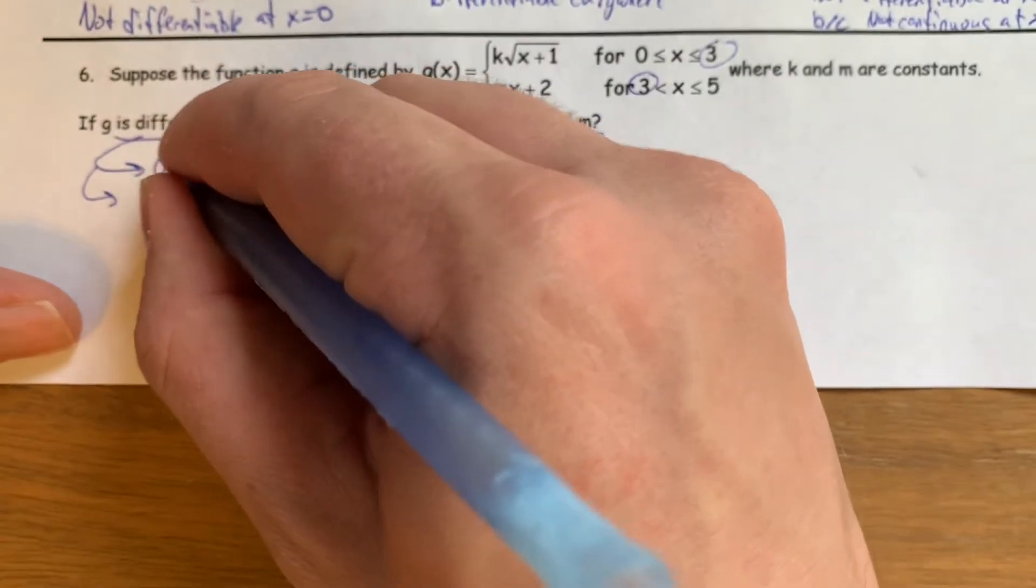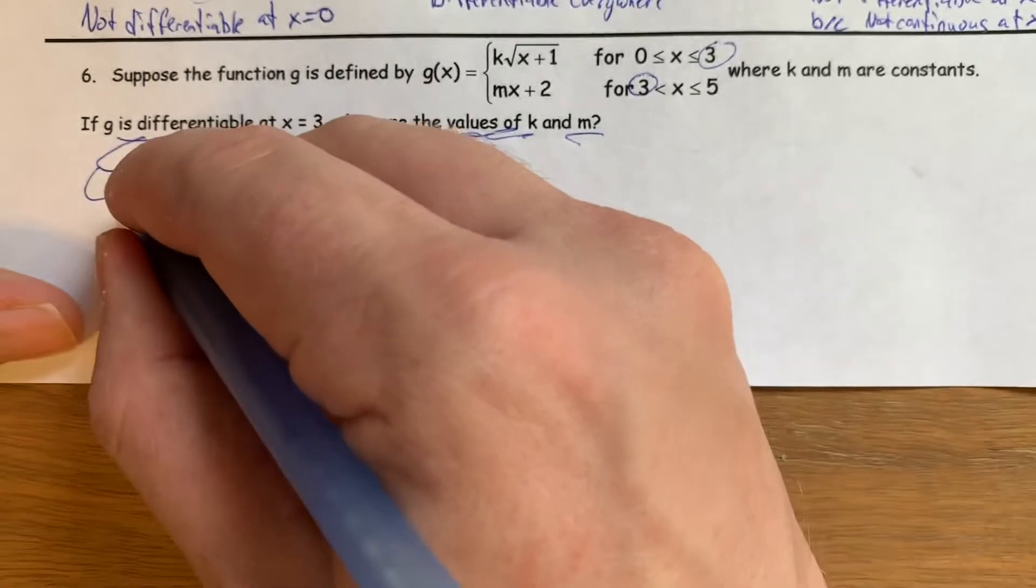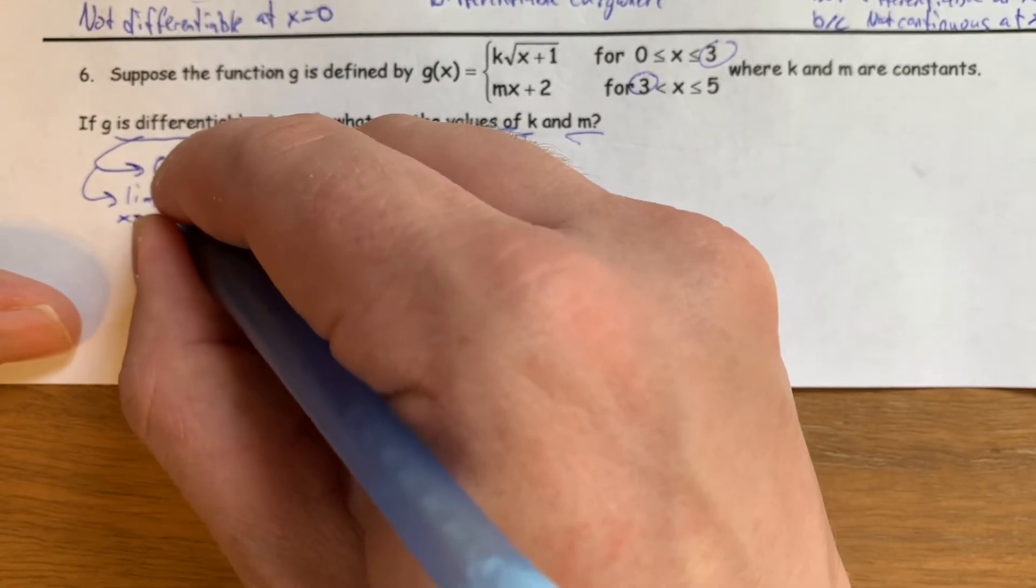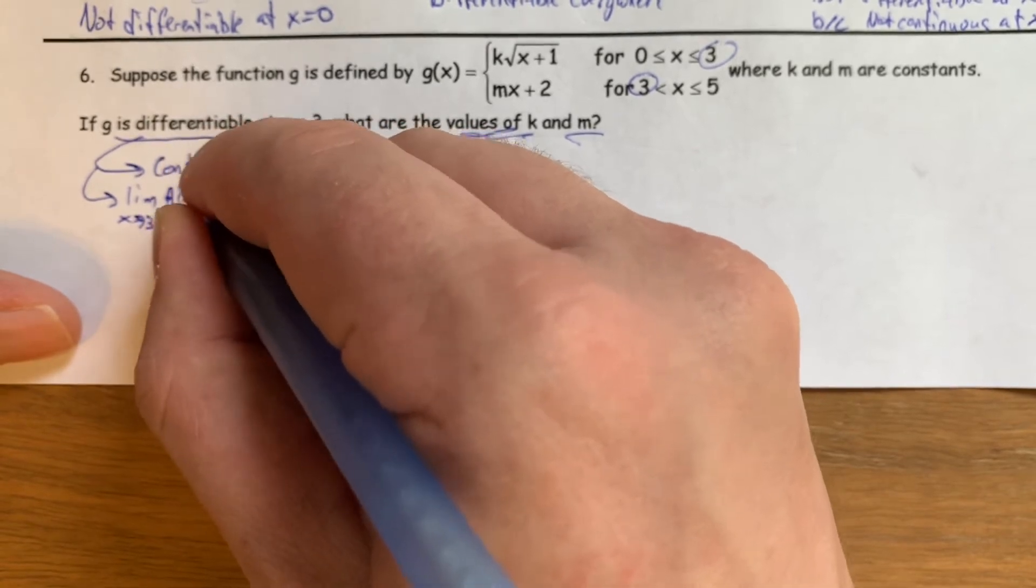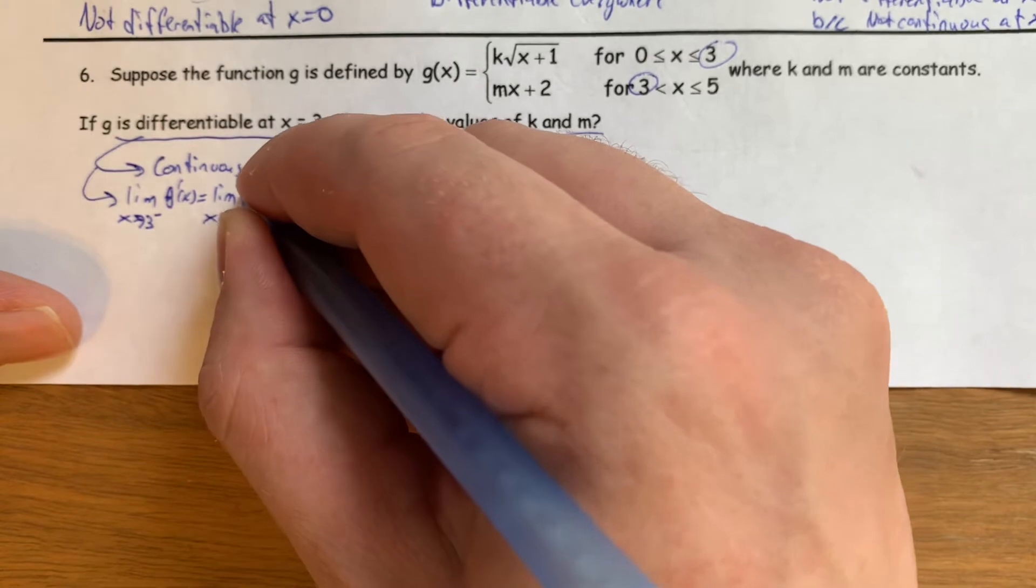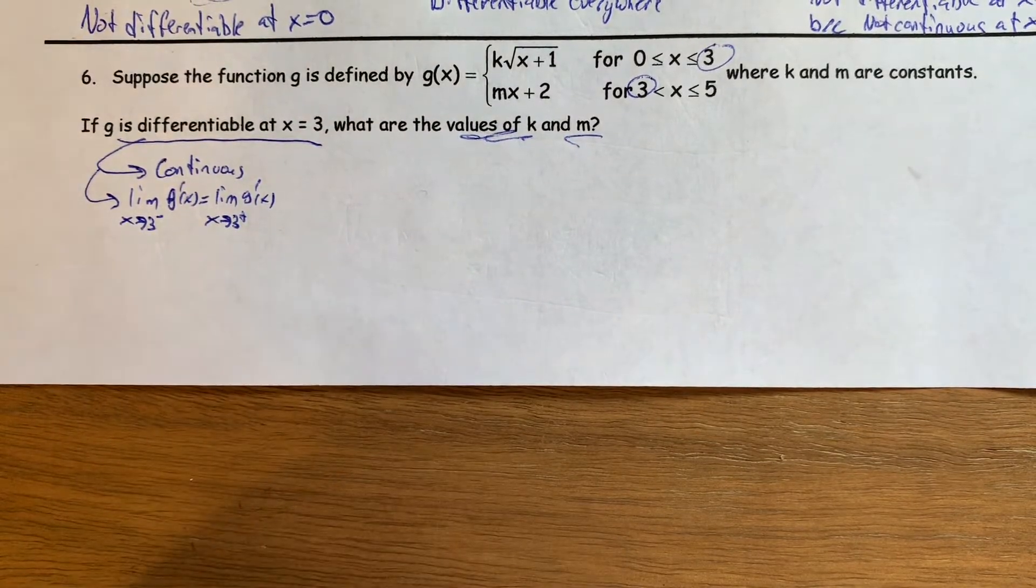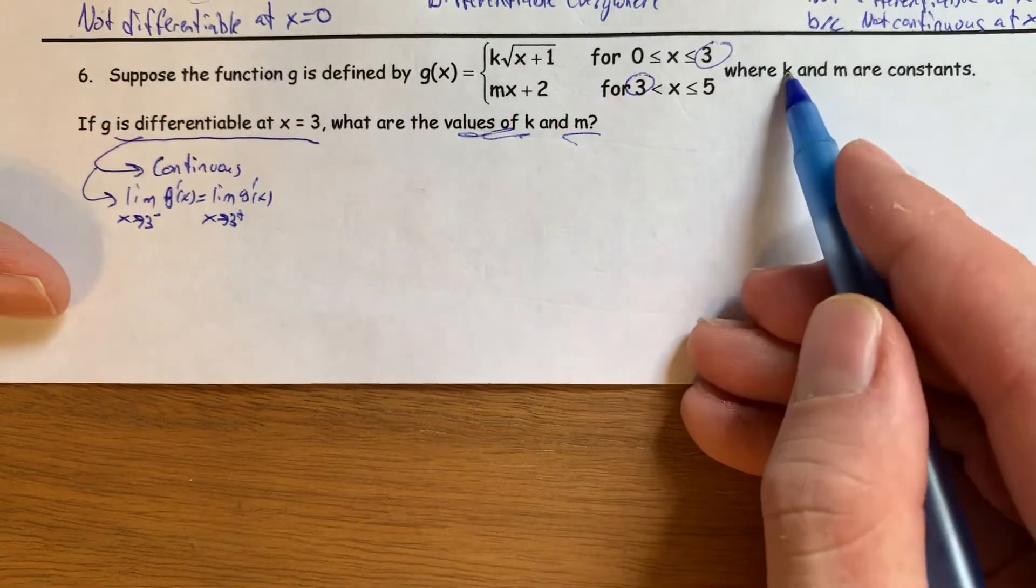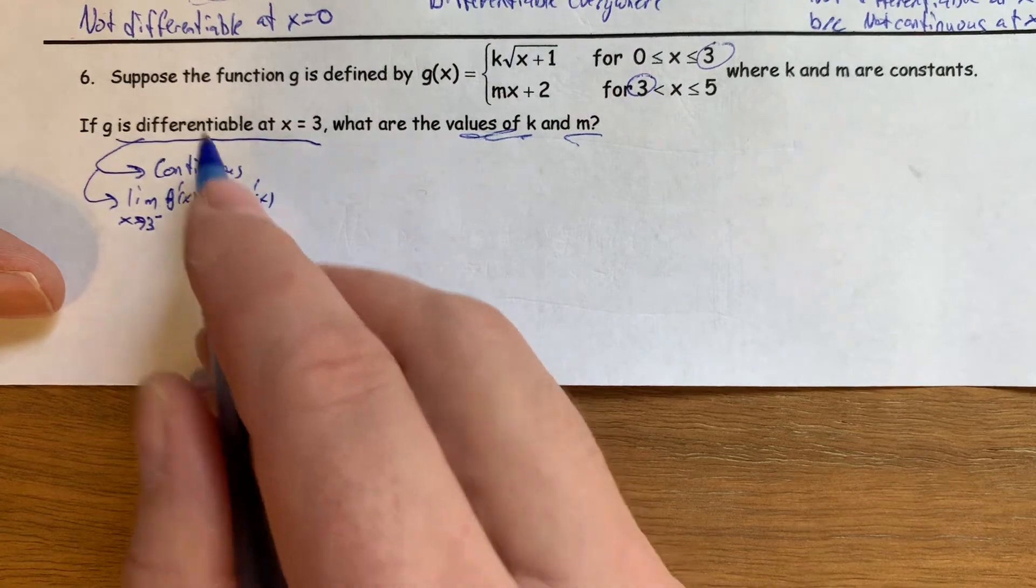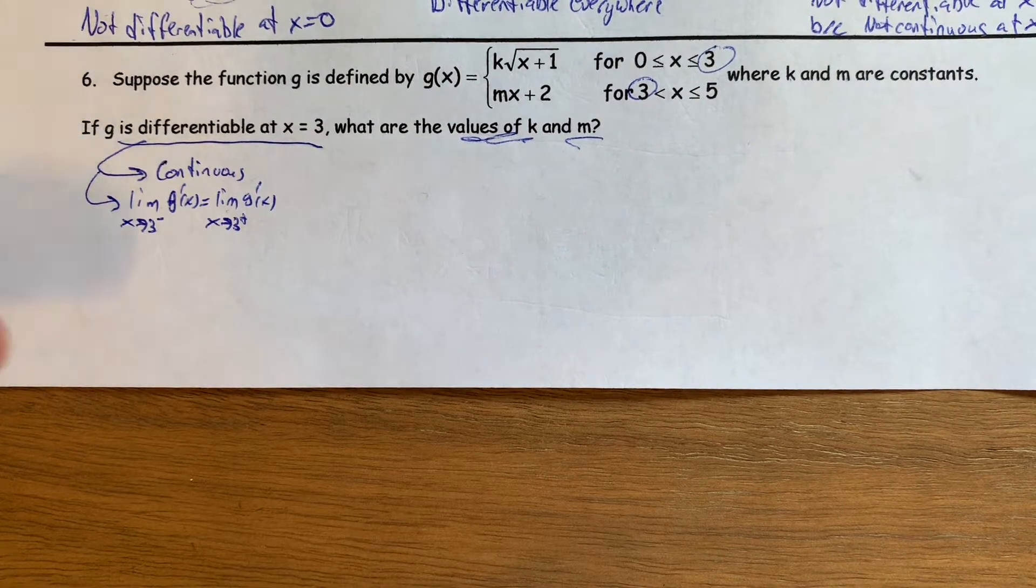The function needs to be continuous, and the function needs to have the limit as x approaches 3 from the left of the derivative of g of x equal to the limit as x approaches 3 from the right of the derivative of g of x. And this will give us two different equations. And that's why there will often be two variables in the equation, because there are two different things that have to be true if it's differentiable. It has to be both continuous, and the limit of the derivatives needs to be the same from both sides.